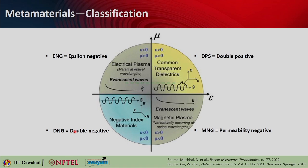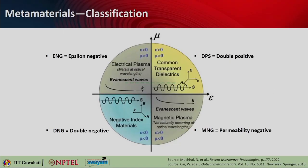To understand metamaterials more, we classify them based on permittivity and permeability. Permittivity is the property that measures the opposition offered against formation of an electric field, given by epsilon — it tells the number of charges required to generate one unit of electric flux in a given medium. Permeability is related to the magnetic field — it measures the ability of the material to allow formation of magnetic field lines within the material, speaking about the ability of magnetization for any applied magnetic field.